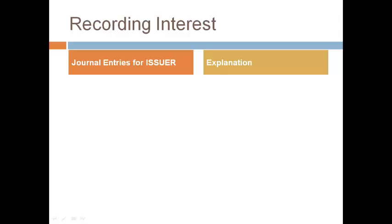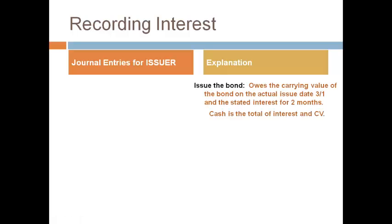We will do journal entries for the company, which is the issuer, first. You should have your amortization table in front of you to see where the amounts come from. The first entry to record is the issuance of the bond — issuing the bond just means the money was borrowed. We will record the credits before the debits. First, record the liability, bonds payable, for the amount in the carrying value column on the date the bond is actually issued, March 1st. Second, record the amount of interest for the two months that have passed before the bond was actually issued — $1,333 from the stated interest column. Do not record the effective interest amount, as no interest was actually incurred before the money was received on March 1st. The last thing to record is the cash received, which is the total of the two credits.